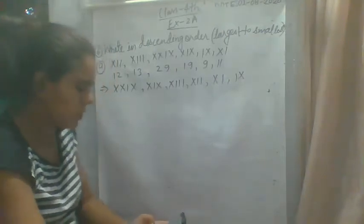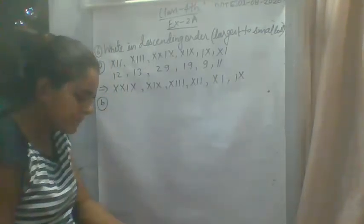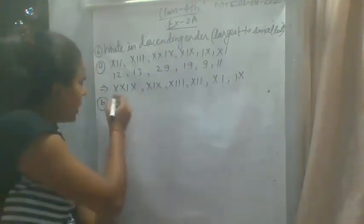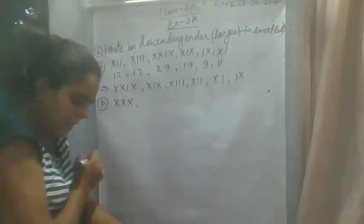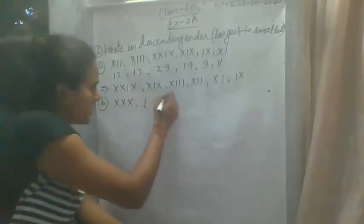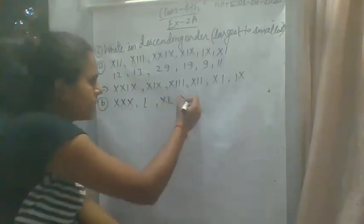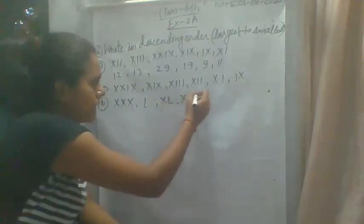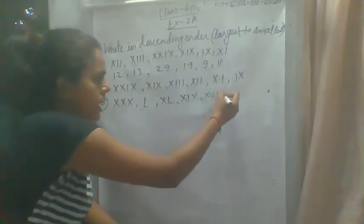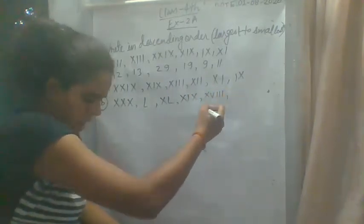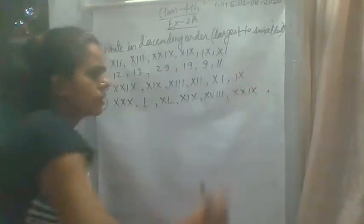Okay, then you can see question B. What is your question? We have written XXX, then L, then XL, then XIX, then XVIII, and then XXIX.